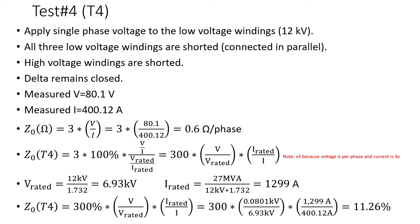So test 4, you apply single phase voltage line to neutral basically to the low voltage winding. For this example I'm using 12 kV. All three low voltage windings are shorted or connected in parallel. High voltage windings in this case are shorted, so we don't have a delta, so we don't have to worry about this.